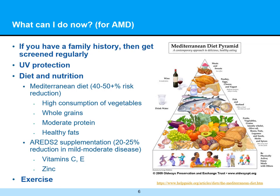Exercise is also a big part of that. So emphasizing UV protection, diet, and exercise is what you can do right now for macular degeneration, whether or not you have it or have a family history.